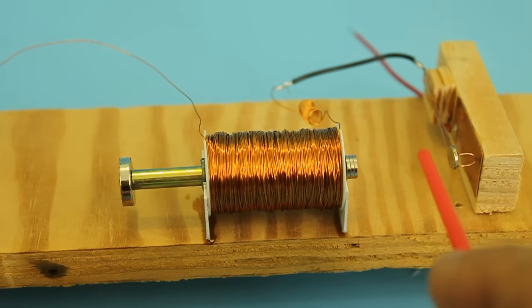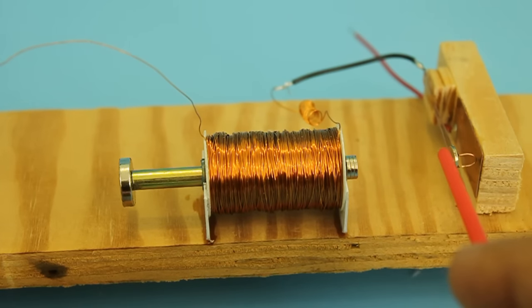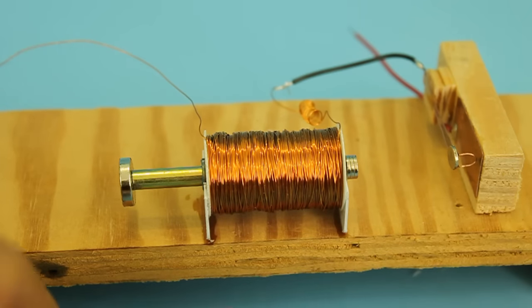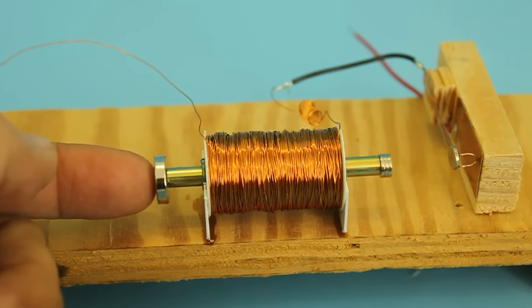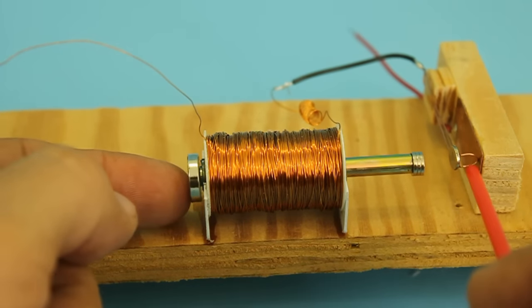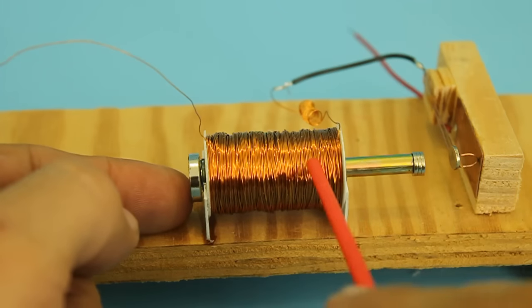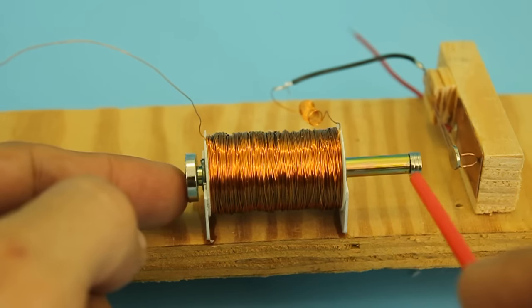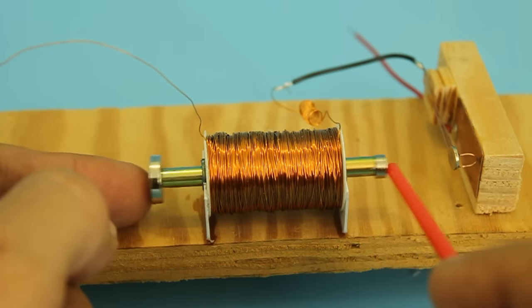When it moves to the left, the switch is deactivated and the electricity is cut. So we must have a way to return the axis to the right, activate the magnetic switch, energize the coil and move it again to the left. So we will have this reciprocation, reciprocating motion of the axis.